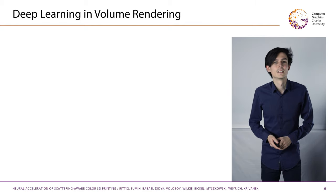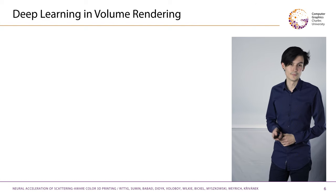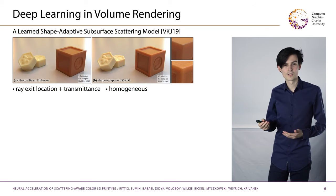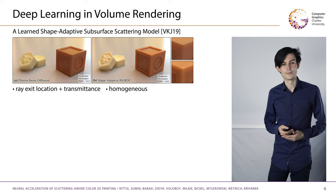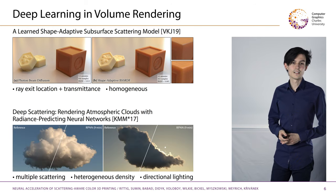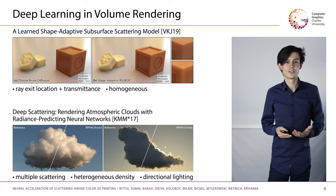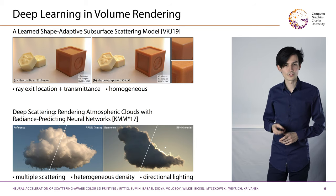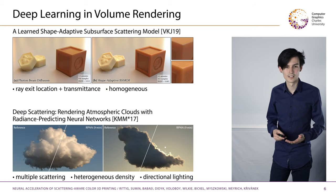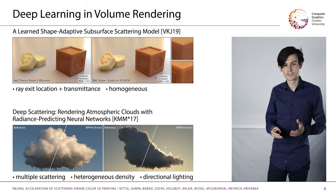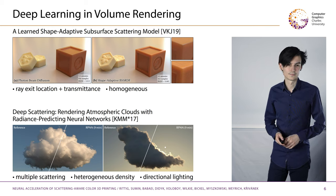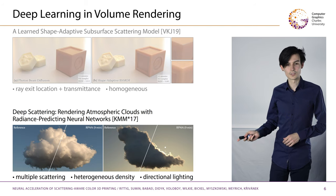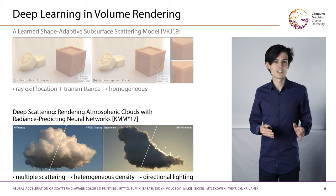Deep learning has been applied to volume rendering before. One work proposes a model that can predict the exit location and transmittance for an incoming ray entering a homogeneous medium. A second work by Kalweit et al. predicts the multiple scattering contribution of media with heterogeneous density for varying directional lighting. Both integrate the neural network into a ray-based simulation, whereas we query the network for the final result without the need for any rays. As the first work is limited to homogeneous media only, we base our approach on the second one and extend it to also work with spatially varying albedo.